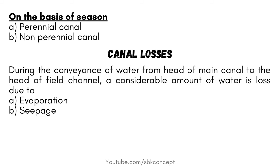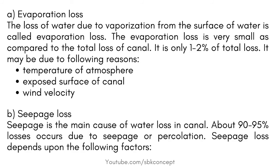On the basis of season: Perennial Canal and Non-Perennial Canal. Canal Losses: During the conveyance of water from the head of the main canal to the head of the field channel, a considerable amount of water is lost due to evaporation and seepage. Evaporation Loss is the loss of water due to vaporization from the surface of water. The evaporation loss is very small as compared to the total loss of the canal — it is only 1–2% of total loss.